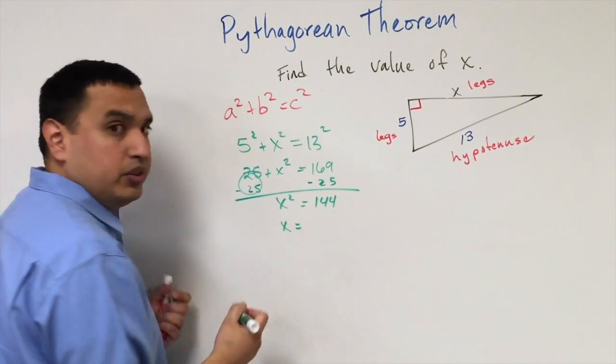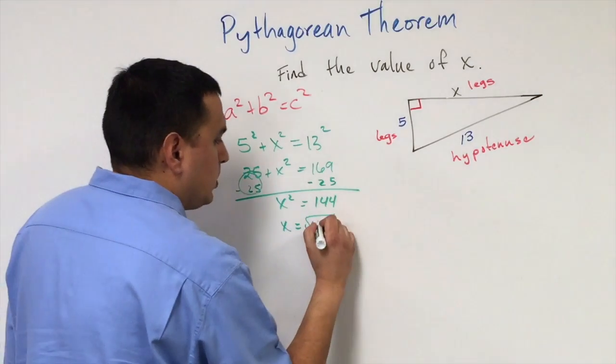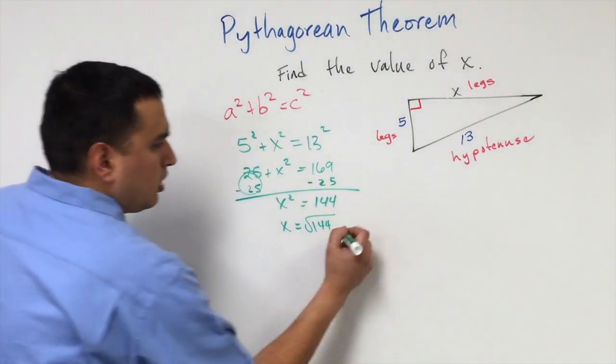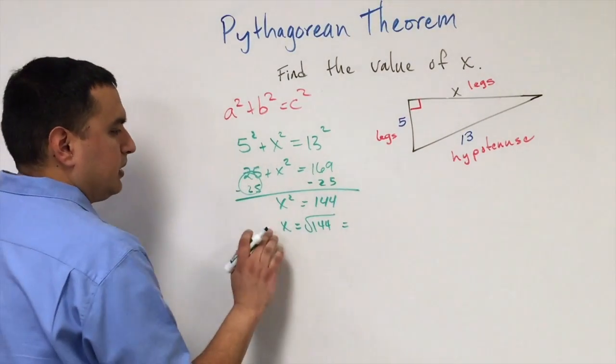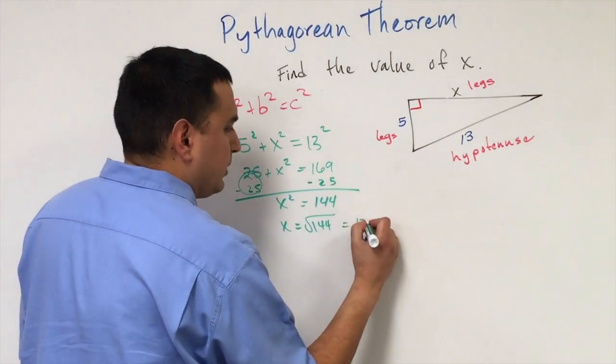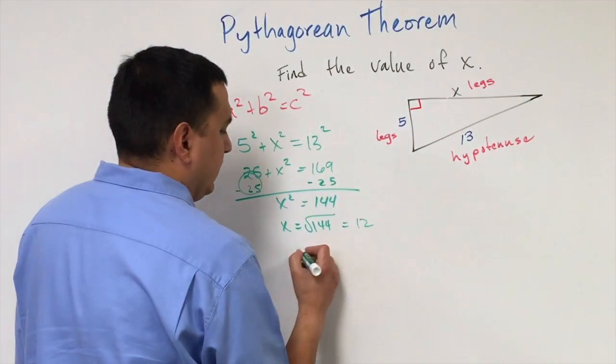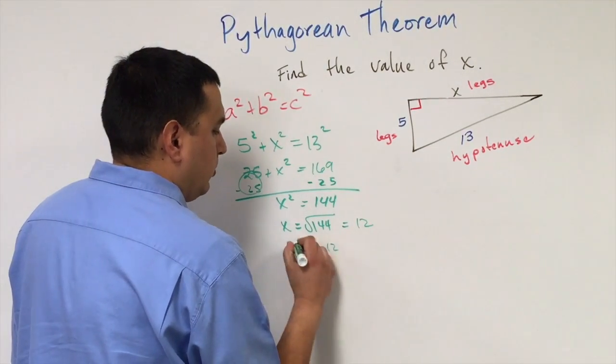Now to get to x, we have to do what's called the square root. That's the opposite of squaring something, opposite operation. Square root of 144 is going to be 12. So that tells me that my x is 12.